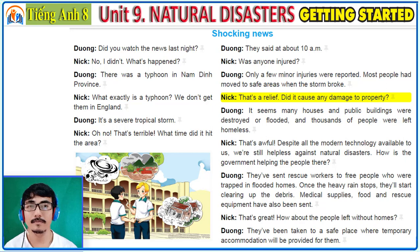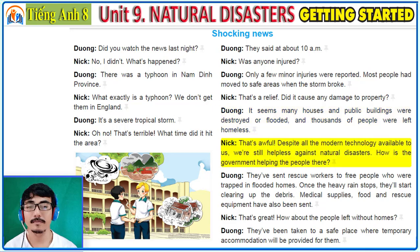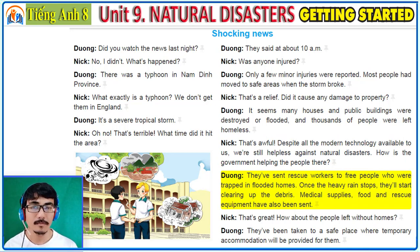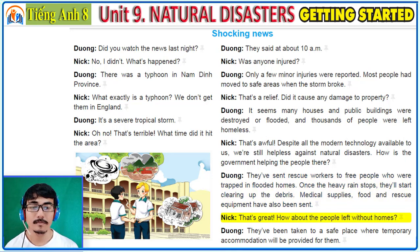Did it cause any damage to property? It seems many houses and public buildings were destroyed or flooded, and thousands of people were left homeless. That's awful. Despite all the modern technology available to us, we're still helpless against natural disasters. How is the government helping the people there? They've sent rescue workers to free people who were trapped in flooded homes. Once the heavy rain stops, they'll start clearing up the debris. Medical supplies, food, and rescue equipment have also been sent. That's great. How about the people left without homes? They've been taken to a safe place where temporary accommodation will be provided for them.